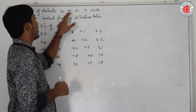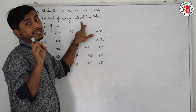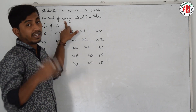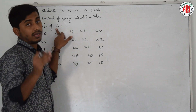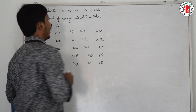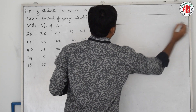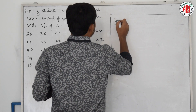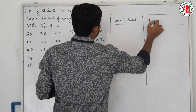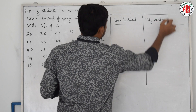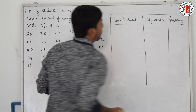Here, the problem says there are 30 students in a class, and we are asked to construct a frequency distribution table with a class interval of 4. To draw this table, first write the class interval, then write the tally marks, then write the frequency.